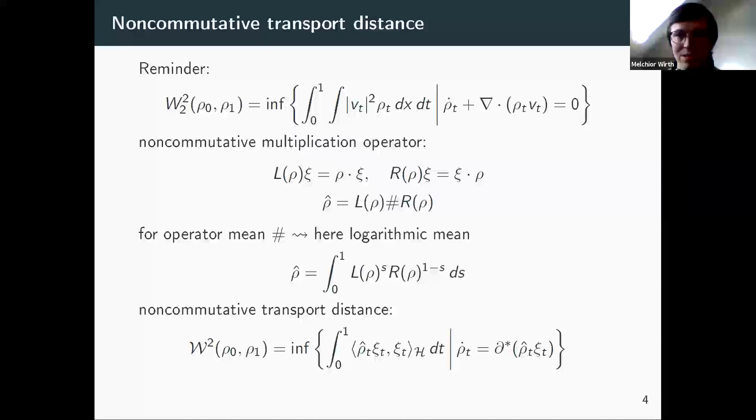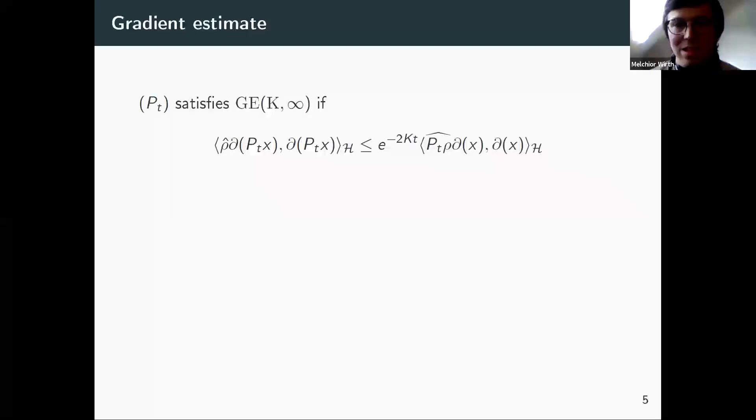And then remember Otto's result, which we want to recover. He told us that the heat flow is a gradient flow of the entropy with respect to this L^2 Wasserstein distance. So here we will not fully recover this result unconditionally. We need some further assumptions. This is now where we really get close to the Ricci curvature business. And we say P_t satisfies this gradient estimate, which I wrote here. So if you have never seen something like that before, it probably doesn't mean too much for you. So let's look at the example.